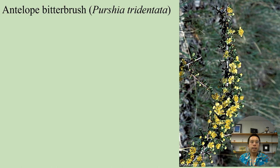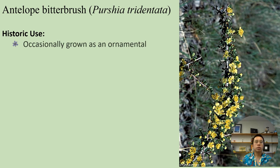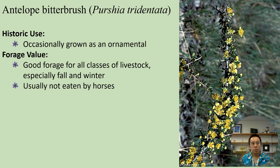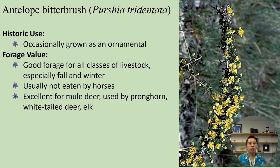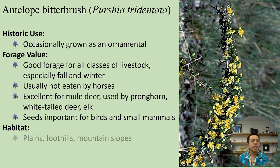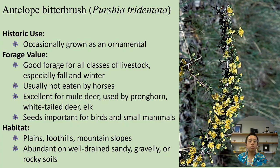Purshia tridentata has historically been used as an ornamental plant in some places. In terms of forage, it's typically considered good forage for all livestock classes, especially in the fall and winter, but is usually not eaten by horses. It's often considered excellent forage for mule deer, pronghorn, and white-tailed deer, as well as elk. The seeds are important for small mammals and bird species. Habitat-wise, it typically occurs on plains, foothills, and mountain slopes, and is abundant on well-drained sandy, gravelly, or rocky soils.